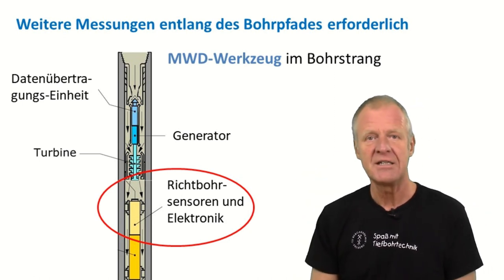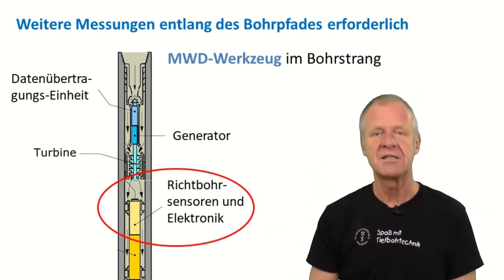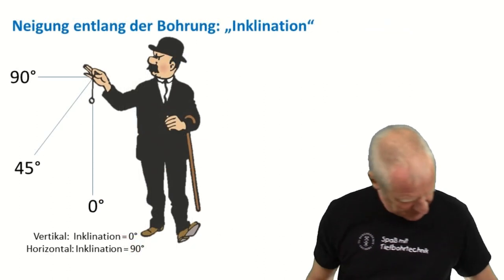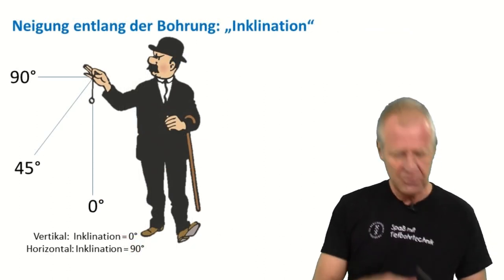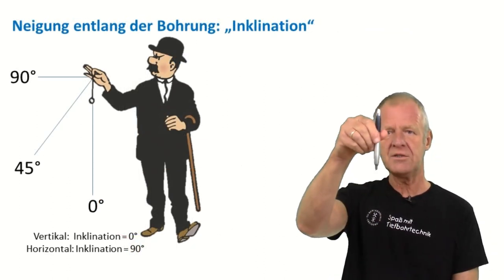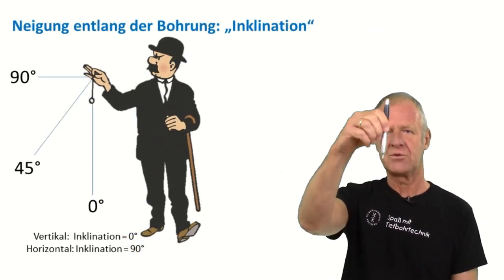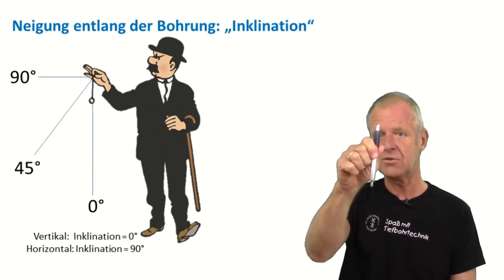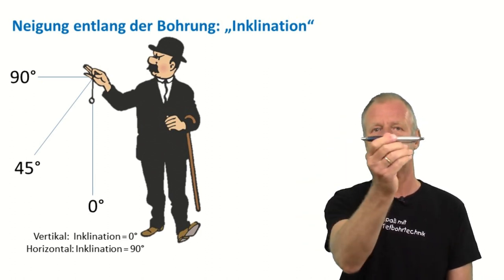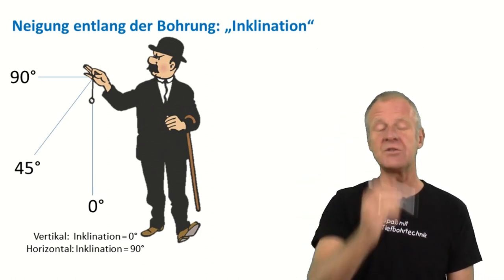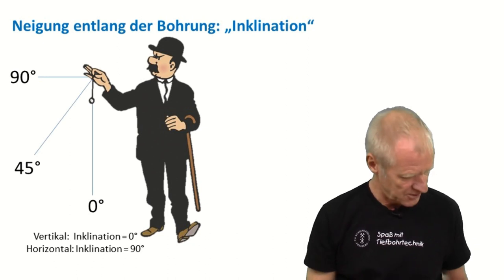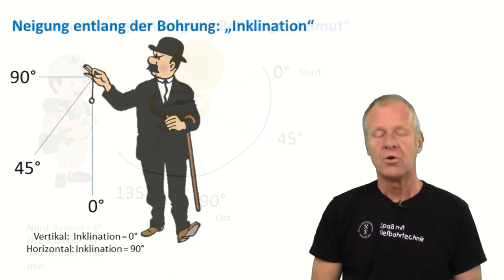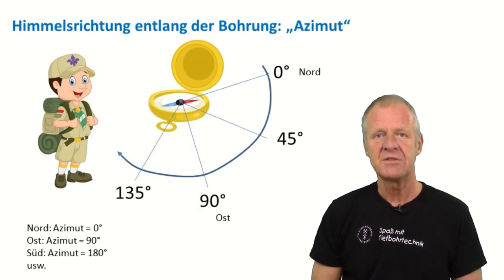MWD stands for Measuring While Drilling. As we drill, it continuously takes measurements along the well path. For example, it measures the inclination of the borehole. If you drill vertically, the inclination is zero degrees, and if we're on the horizontal, that would be a 90 degrees inclination.